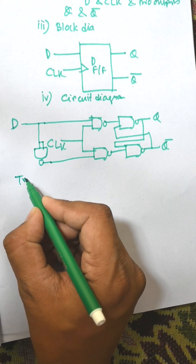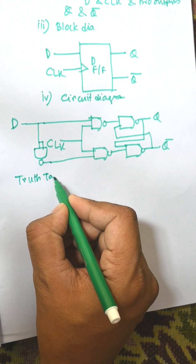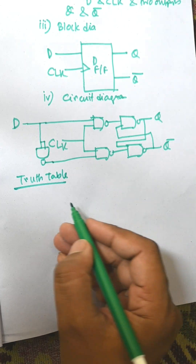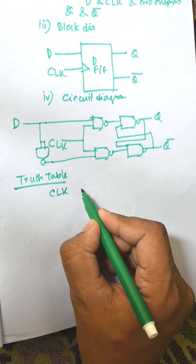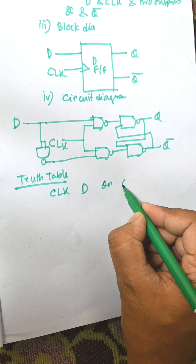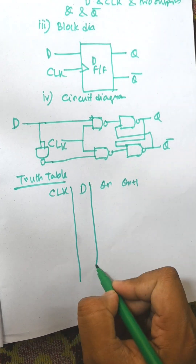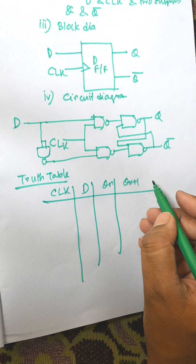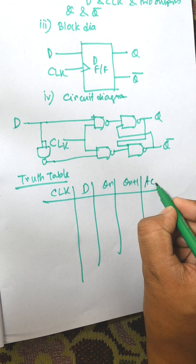Now the truth table. The columns are CLK, D, QN (current state), QN+1 (next state), and the final column is Action.